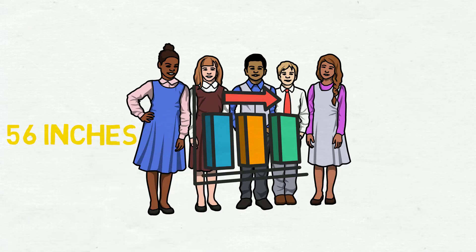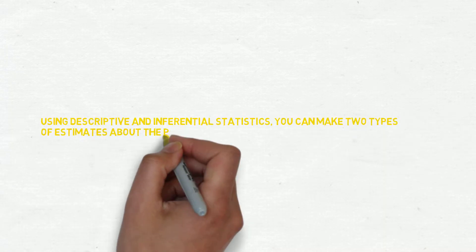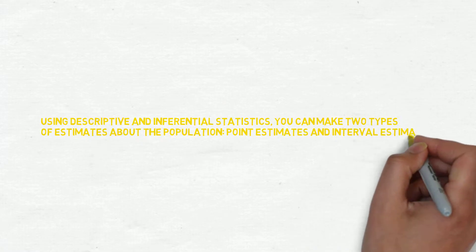Using descriptive and inferential statistics, you can make two types of estimates about the population: point estimates and interval estimates.